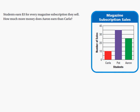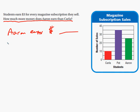I'm going to use the UPC method we use in class. This is a multi-step problem, and a lot of people will get problems like this wrong because they're not reading the question. I'm going to underline the question: 'How much more money does Aaron earn than Carla?' Then I'll restate it as an answer statement: 'Aaron earns ___ more dollars than Carla.'